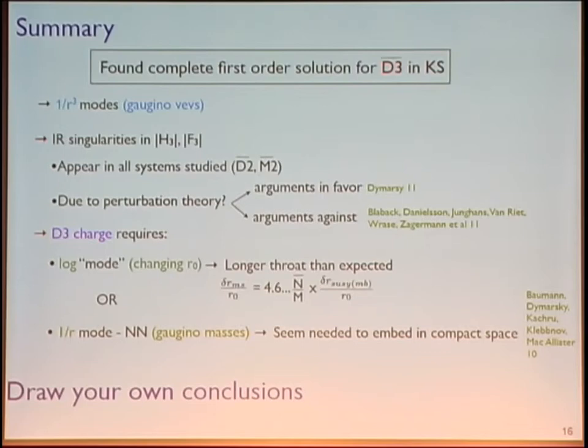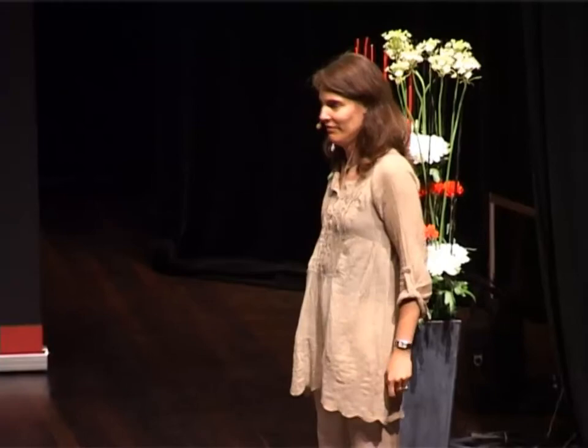Thank you. [Question from audience]: Very interesting work, amazing effort. Just a question: you find this shift of gaugino condensates — is that related to the shift in the epsilon parameter? [Speaker]: They are all related because they are all proportional to N-bar over M, so yes. [Questioner]: So can you say that this lengthening of the throat — in other words, the redefinition of the radii — is there a precise relation? [Speaker]: We have a precise relation, but it's not a rational number, so I don't know.